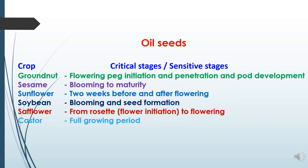Critical stages in oil seed crops: In groundnut, flowering, peg initiation, peg penetration and pod development stages are most critical. In sesame, blooming to maturity. In sunflower, two weeks before and after flowering. In soybean, blooming and seed formation stage. In safflower, rosette stage (also known as flower initiation to flowering stage). In castor, the full growing period is critical as it requires water throughout.